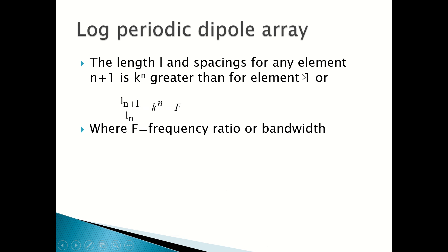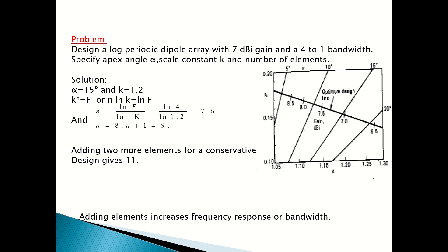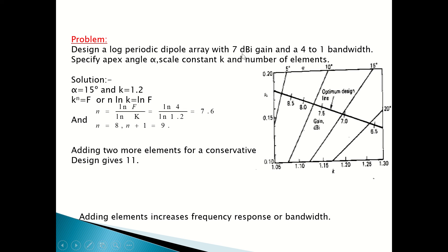The length and spacing for any element n+1 relative to element 1 scale as k^n, where n is the number of elements. This ratio equals the frequency ratio or bandwidth. These are the basic equations of the log periodic dipole array. Now considering a design problem: design a log periodic dipole array with 7 dBi gain and a 4:1 bandwidth. Specify the apex angle α, scale constant k, and number of elements.